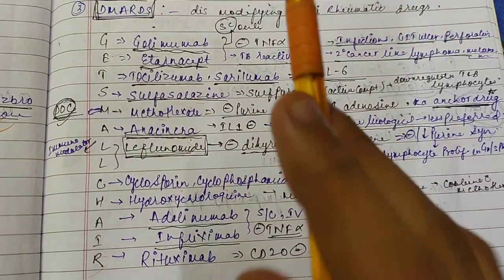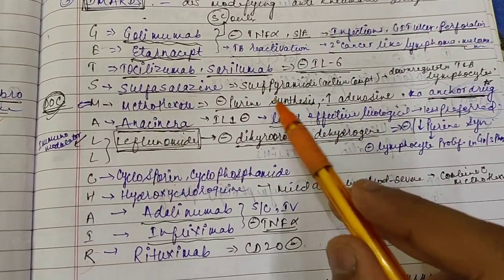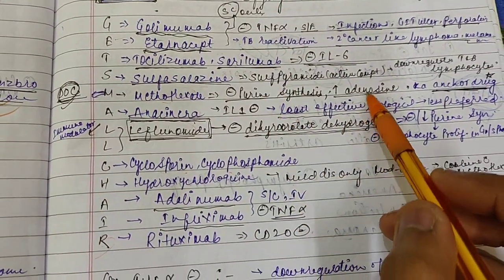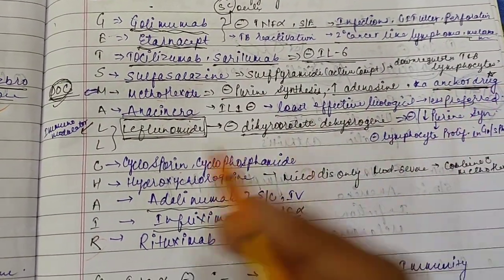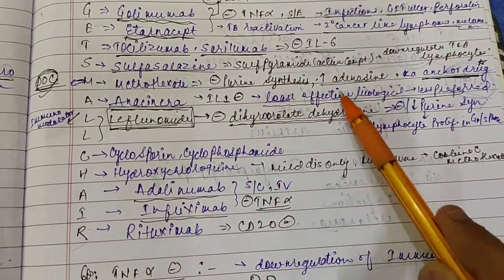Sulfasalazine can also be used here. Next, your Methotrexate. We have discussed Methotrexate in a different video. It also inhibits your purine synthase and it is known as anchor drug for rheumatoid arthritis. Then Anakinra, so it is interleukin-1 inhibitor and it is less effective biological, so less preferred.